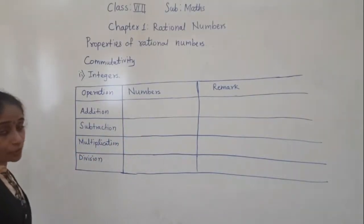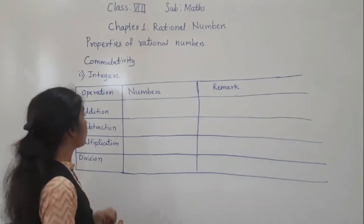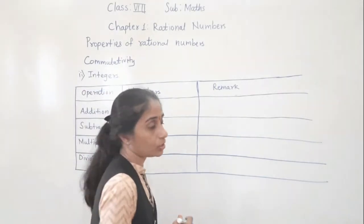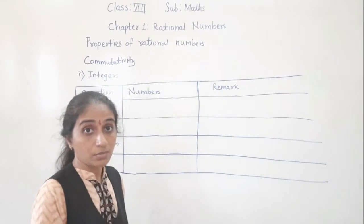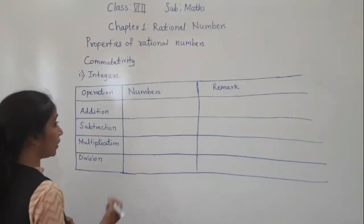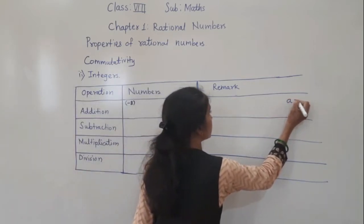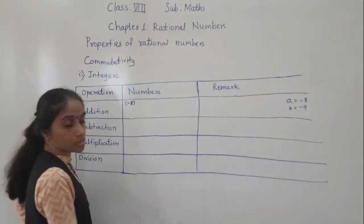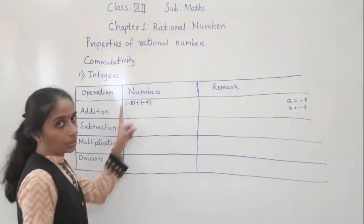Now commutative property for integers. You have learned the commutative property for whole numbers. Now we will see for integers, first for the operation addition. I will take one example. See, I am writing: a is equal to minus 8 and b is equal to minus 9. For addition: minus 8 plus minus 9 — that is a plus b.